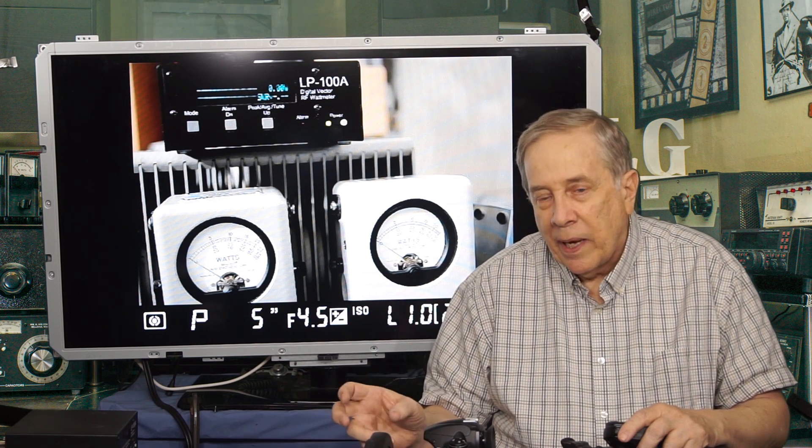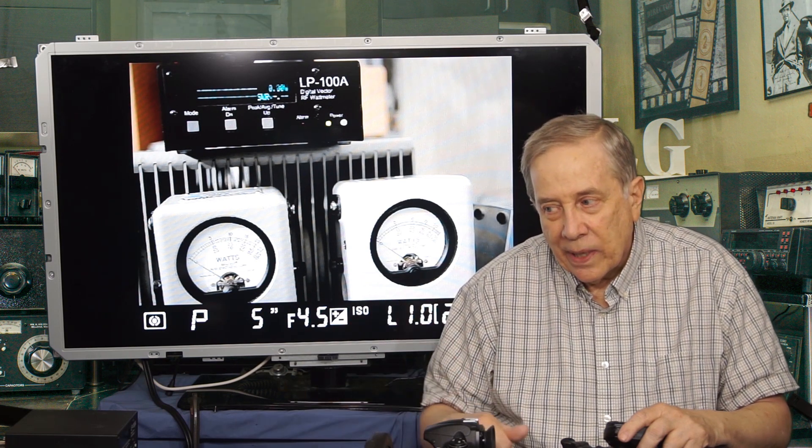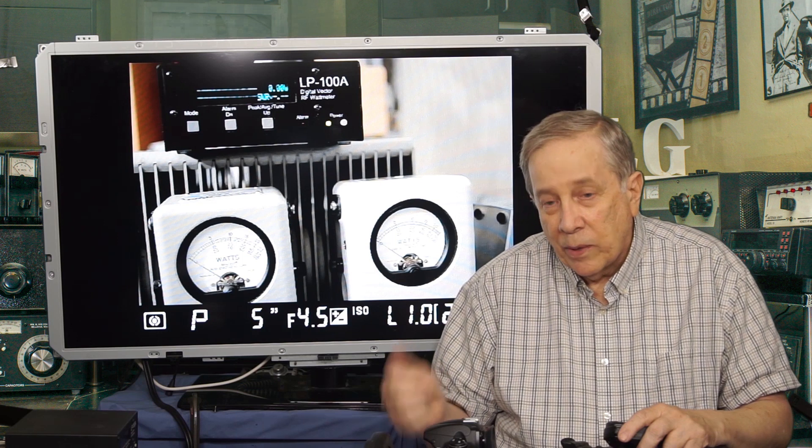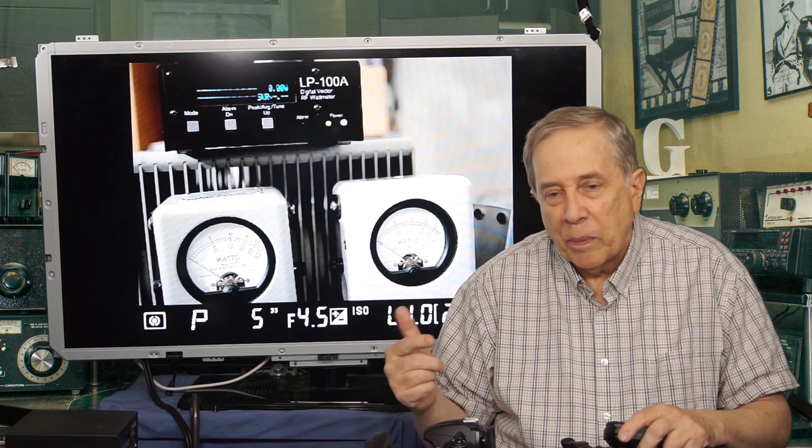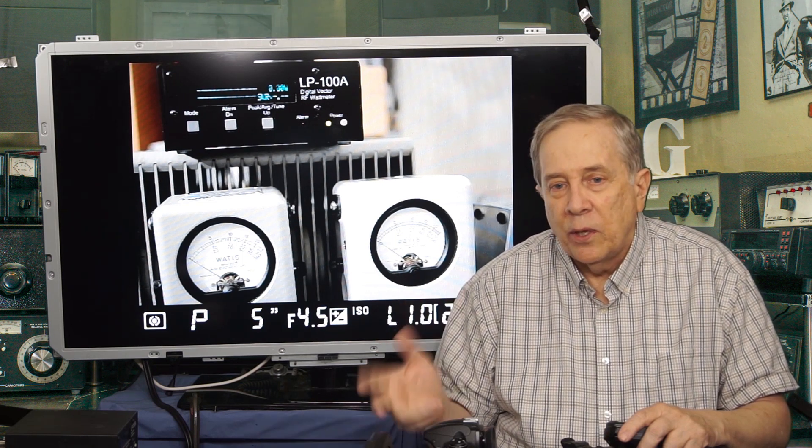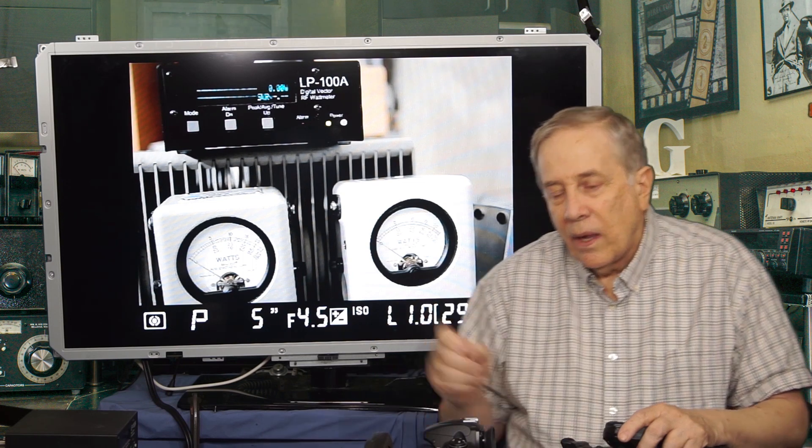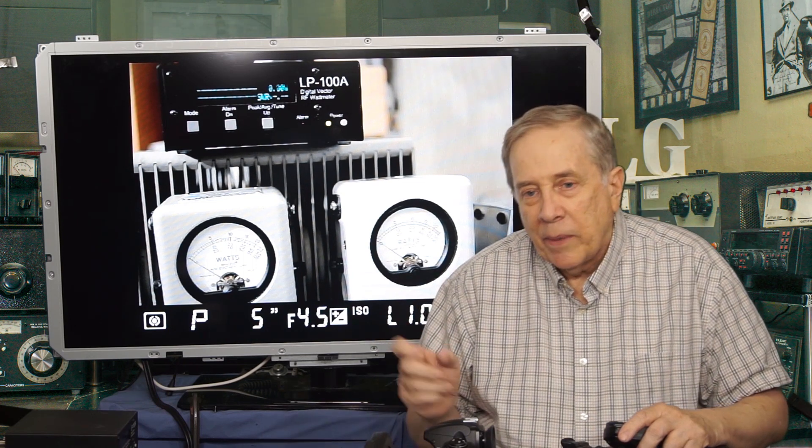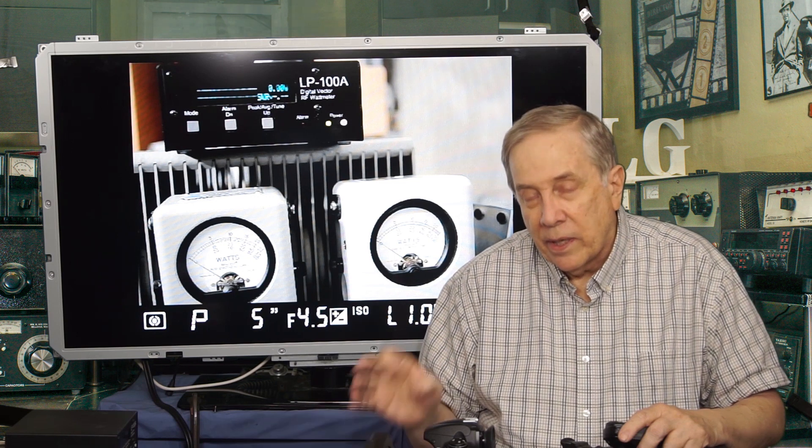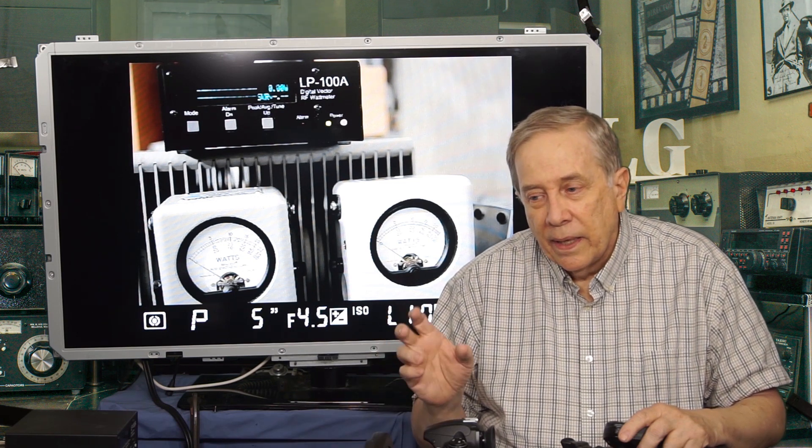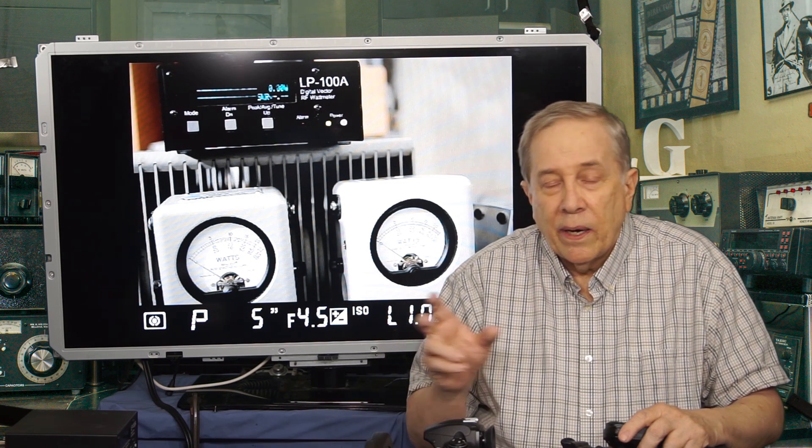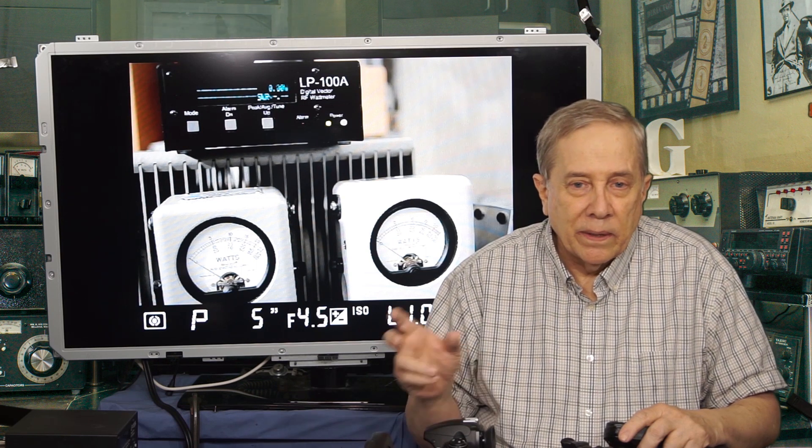So if you're tuning up an amplifier and you're exceeding by 20% grid current, plate current, screen current, tubes are going to be ruined in short order. Along with that, you're going to be splattering, or the transceiver will be splattering because the amplifier is tuned up at one point. And it also could be an older style transmitter where you literally tune it up.